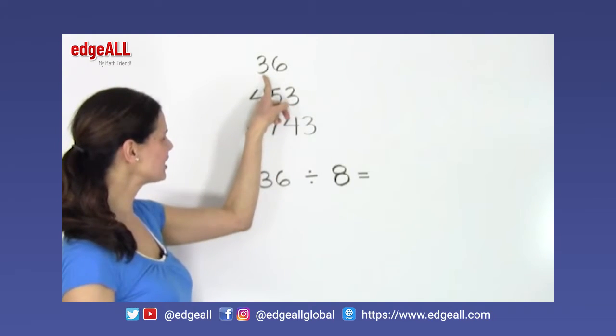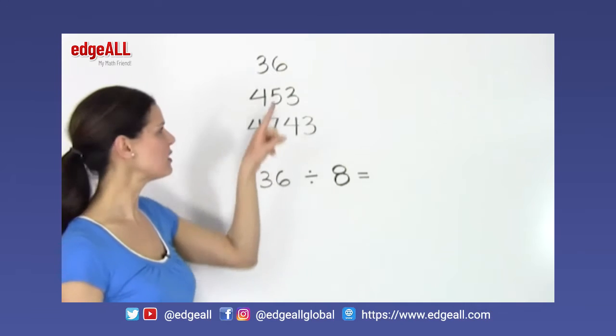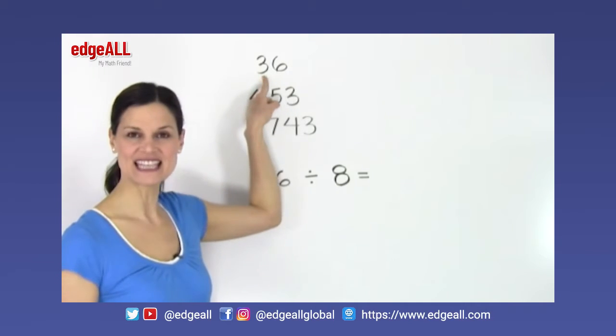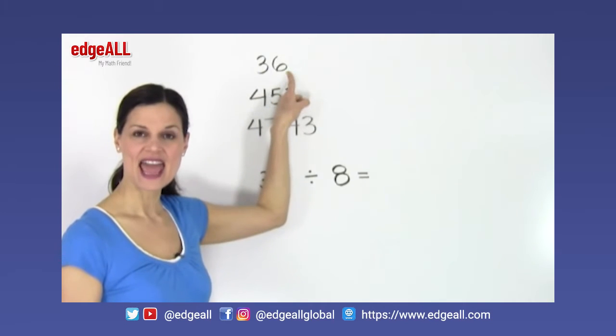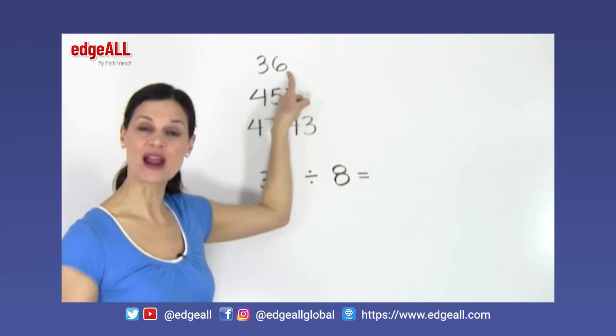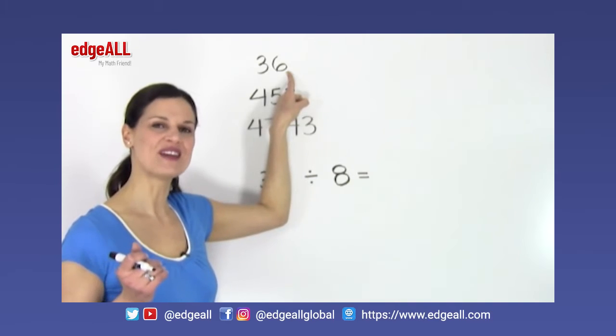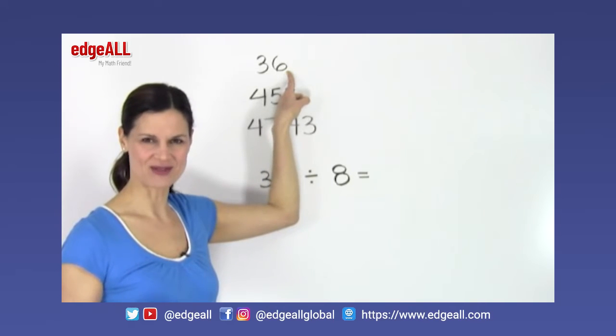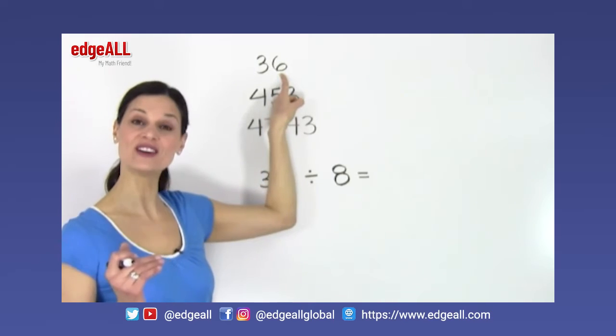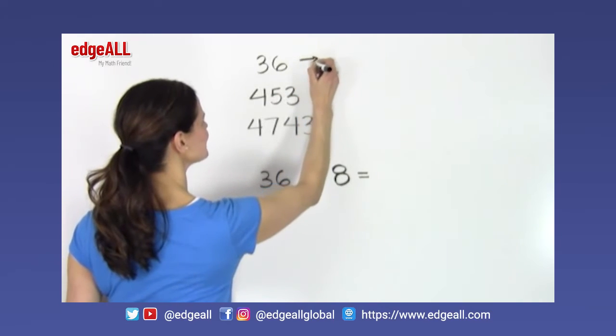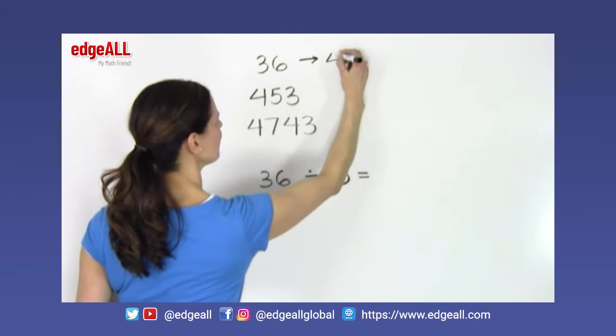So in the 36, we know that we want to round to the nearest 10, and so we look at that next number here, which is a 6. And if it's 5 or greater, we round up. If it's 4 or less, we round down. In this case, our 6 is 5 or greater, so I'm going to round 36 up to 40.